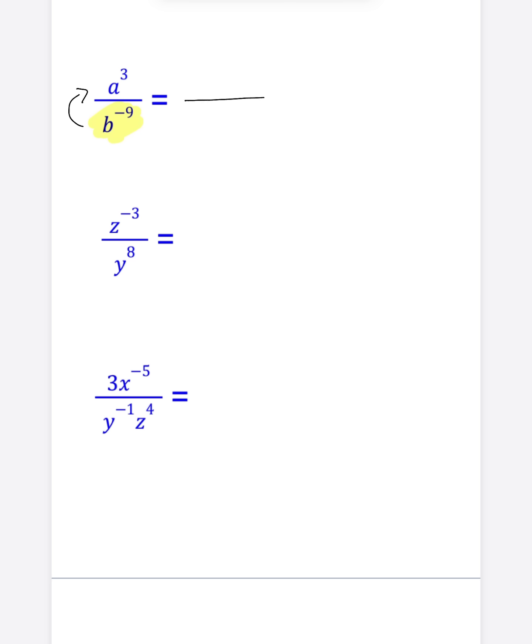B has a negative exponent. It was in the denominator. My rule said move it to the other side, which would be the numerator. Rule number two or step number two, make the negative exponent positive. So this becomes B to the ninth power.